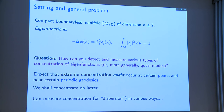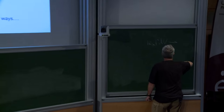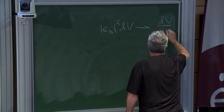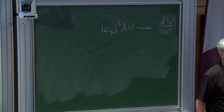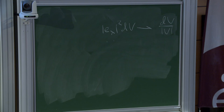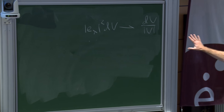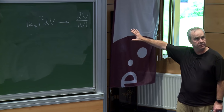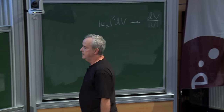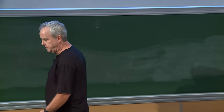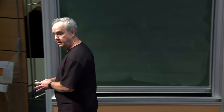On a compact manifold there's nowhere for the eigenfunctions to disperse. There's a famous problem which says, for instance, when you have negative curvature, if you take these probability measures they should converge weakly to the uniform measure — that's called the quantum unique ergodicity conjecture. It's very difficult to prove. It's conjectured in the case of negative curvature by Rudnick and Sarnak, was proved in some special cases by Lindenstrauss, and that was one of the things cited when he won the Fields Medal.